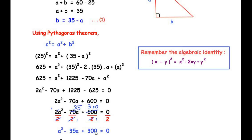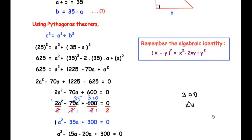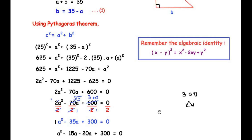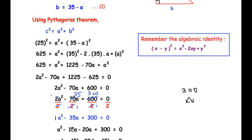We factorize using the splitting the middle term method. We need two factors of 300 (1 × 300) that multiply to give 300 and add to give −35. The two factors are −15 and −20, since (−15) × (−20) = 300 and (−15) + (−20) = −35.